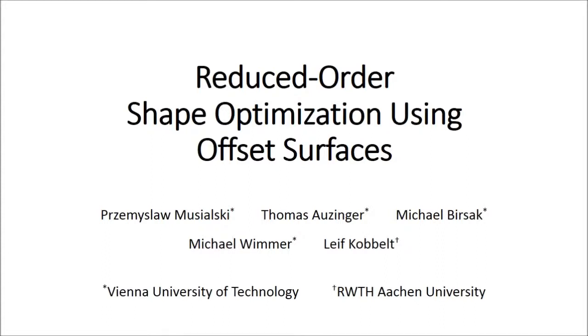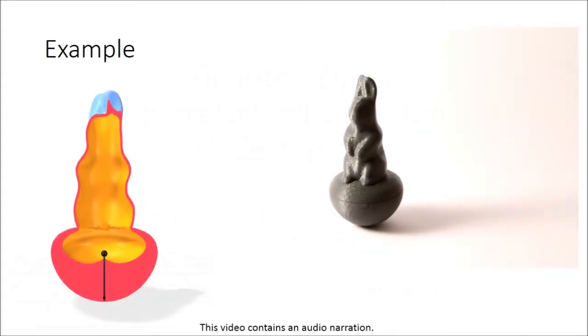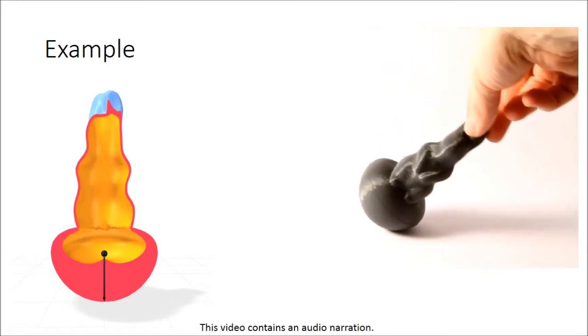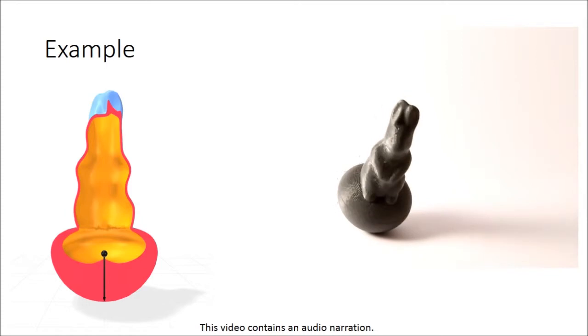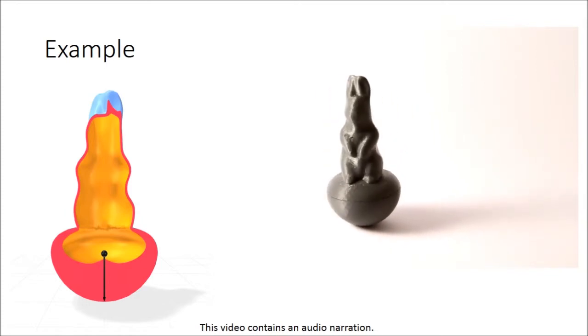Reduced order shape optimization using offset surfaces. The goal of our method is to optimize a shape that fulfills certain global goals. An example of such a goal is the monostatic stability of an object like this roly-poly rabbit.